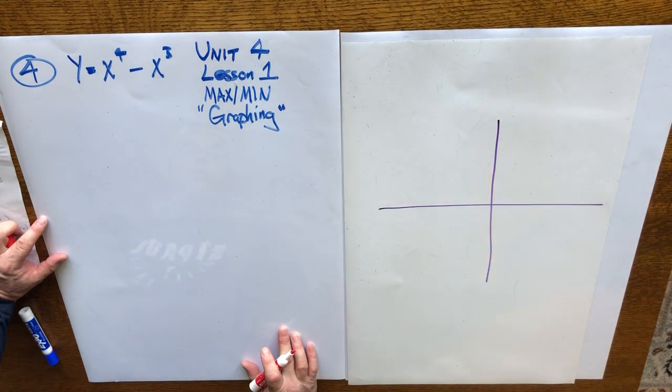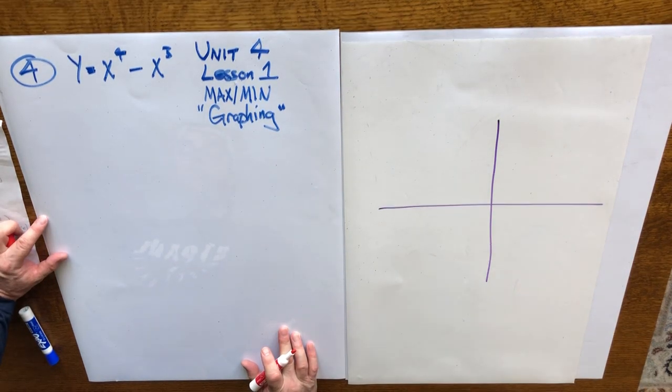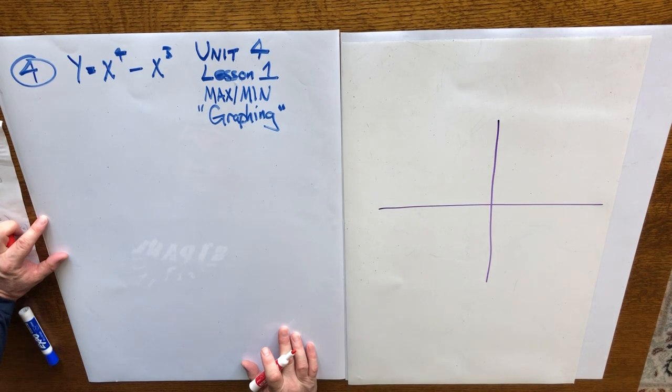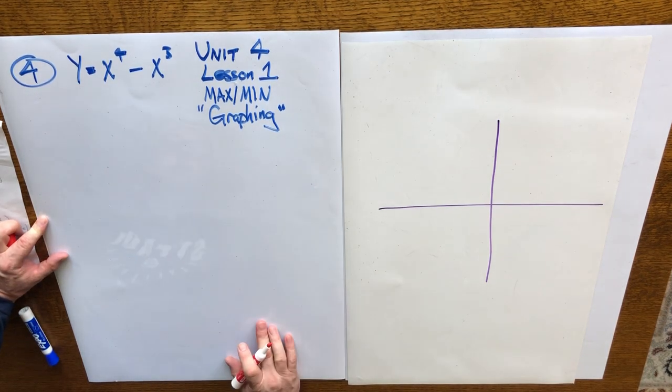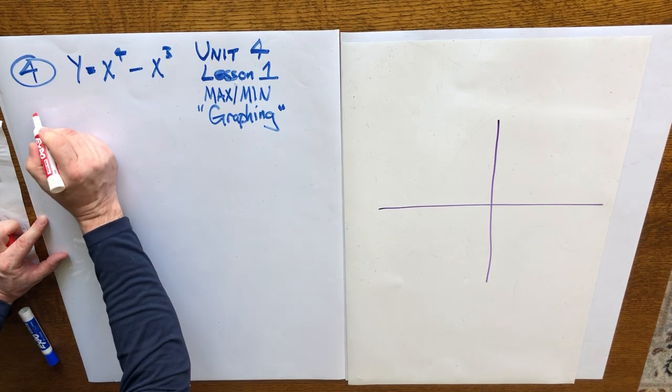Okay everybody, we're going to try Unit 4, Lesson 1, question number 4 from the homework. We're going to graph this function right here by determining its maximum or minimum. So here are what the steps are.